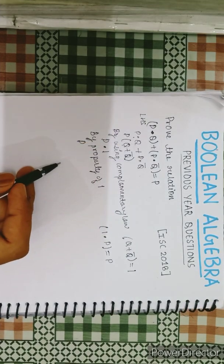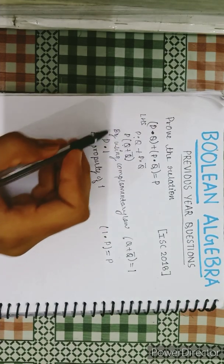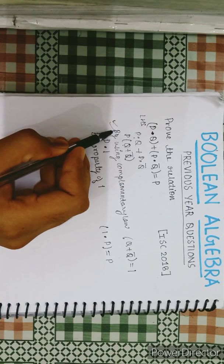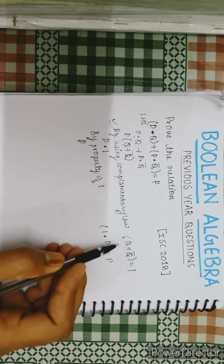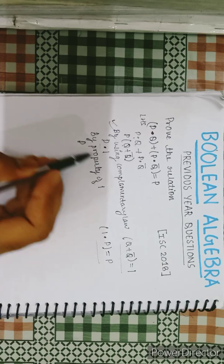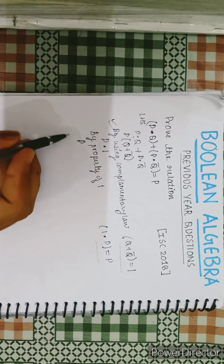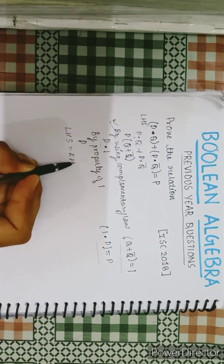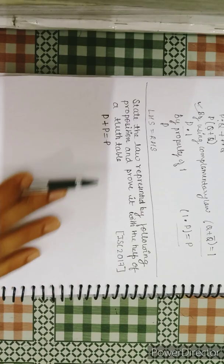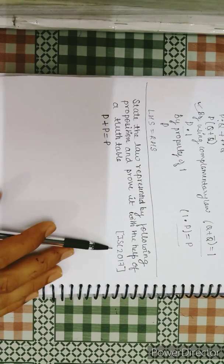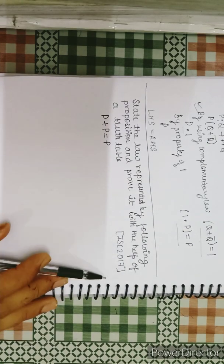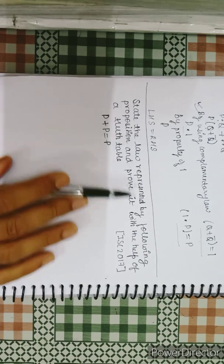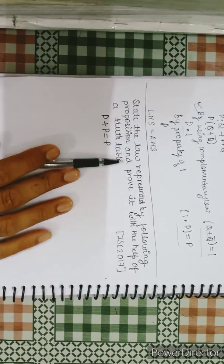In this way we solve the question — mentioning the laws used and how they are applied. At last we write LHS = RHS. The second question came in ISC 2017: state the law represented by the following proposition and prove it with the help of a truth table.